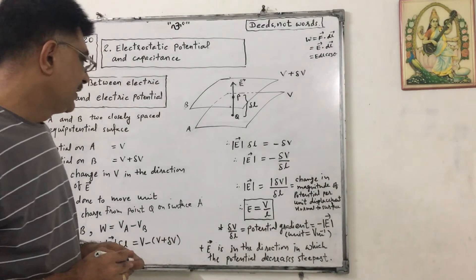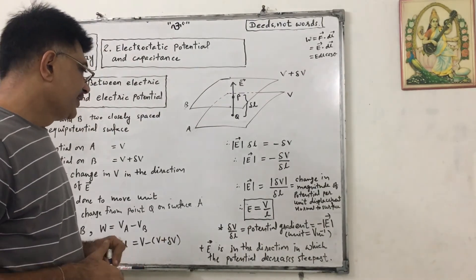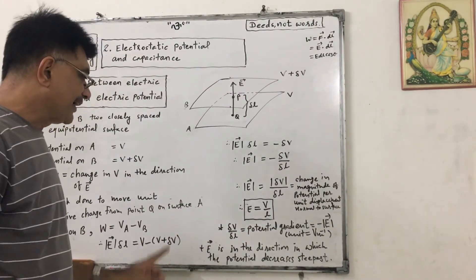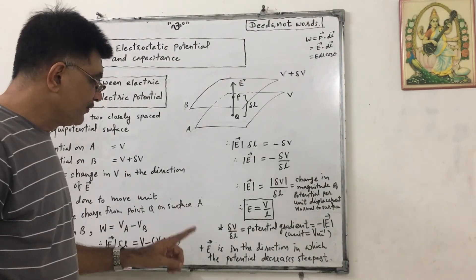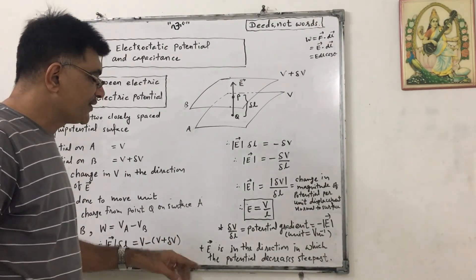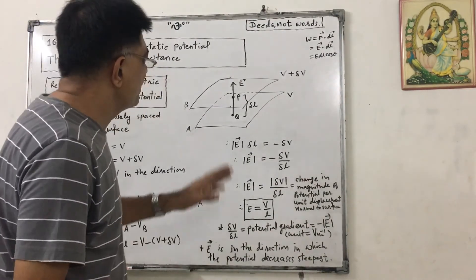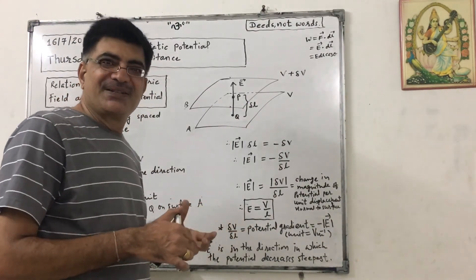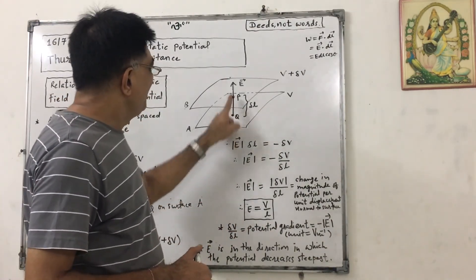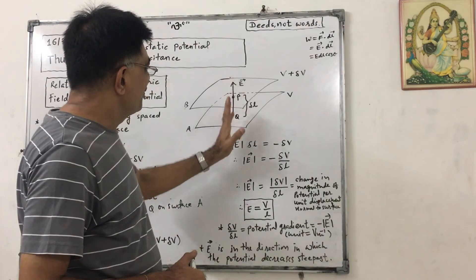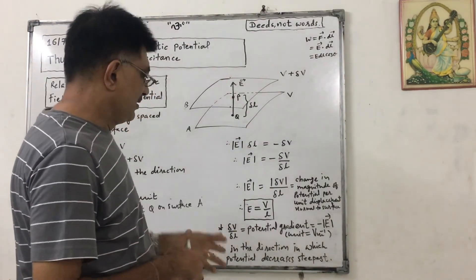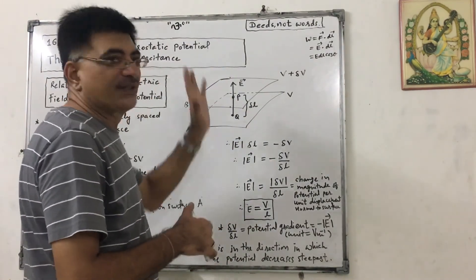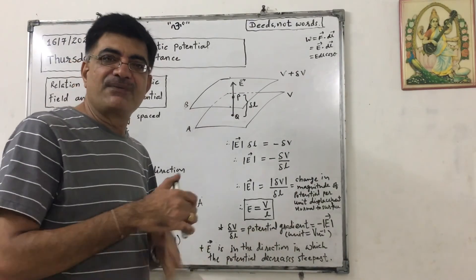Vector E has units of volt per meter. Vector E is in the direction in which the potential decrease is steepest — meaning very sharply and rapidly.